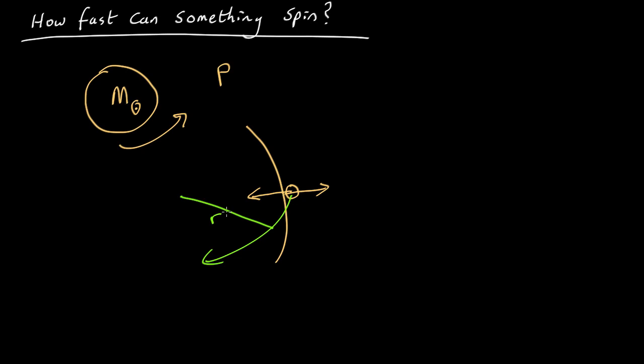Now we know that for anything to move in a circle at radius r at some velocity v, there has to be a net force towards the middle, a centripetal force, of m v squared over r, where m is the mass of whatever it is sitting on the surface.